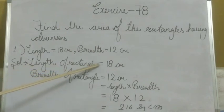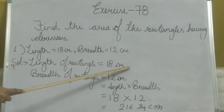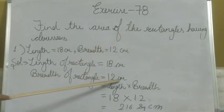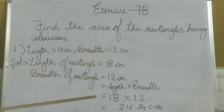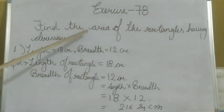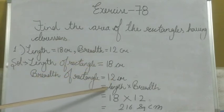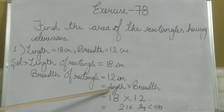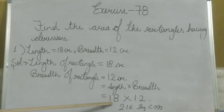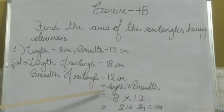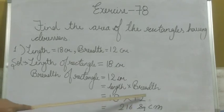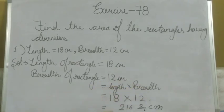The length of the rectangle is equal to 18 cm and breadth of the rectangle is equal to 12 cm. Now, how do we find the area of a rectangle? We use the formula: area of rectangle equals length multiplied by breadth. Length is 18 and breadth is 12. When we multiply both numbers, we get 216. Therefore, the area of the rectangle is 216 cm².